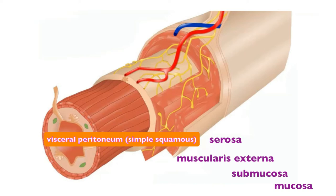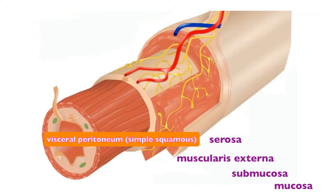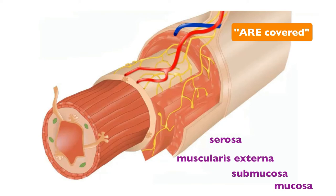The serosa only exists around the digestive tract within the abdominal cavity. The esophagus, which is superior to the diaphragm, has the mucosa, submucosa, and muscularis externa, but instead of a serosa it has a fibrous connective tissue called adventitia. The kidneys are in the abdominal cavity but posterior to the peritoneum, so their anterior surface is covered by serosa and their posterior surface by adventitia.